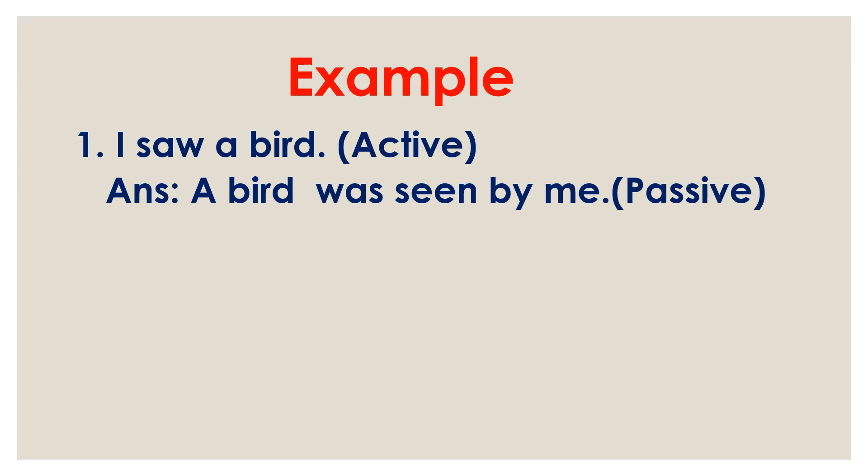Now see some examples. First: 'I saw a bird.' This sentence is in active voice. Here 'I' is subject, 'saw' is verb, and 'a bird' is object. Saw is in past form. So at first we use object 'a bird', then helping verb 'was' — because 'saw' is past tense — then third form of 'see', that is 'seen', then 'by', then subject 'I' changed to 'me'. So the passive is: 'A bird was seen by me.'